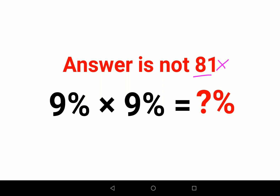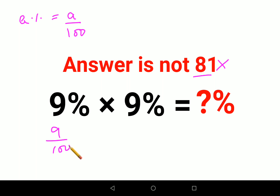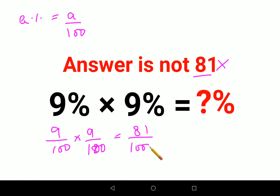Whenever you have a percentage sign ahead of a number, you can convert it into a fraction by dividing that number by 100. So similarly, we will have 9 upon 100 into 9 upon 100, which gives you 81 upon 10,000.